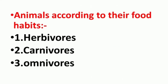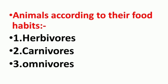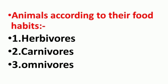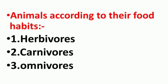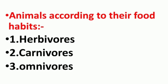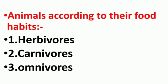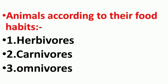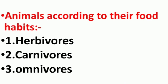Children, different animals have different feeding habits. Some animals eat leaves, fruits, nuts, and even the stem of the plants. While some eat flesh of other animals, and some other animals eat both. Now we will discuss about animals according to their food habits. Number one: herbivores. Number two: carnivores. And number three: omnivores.